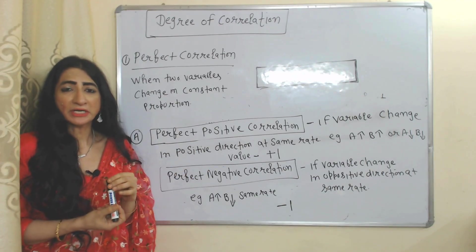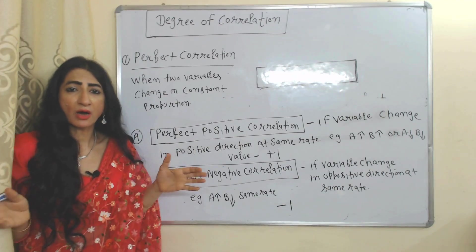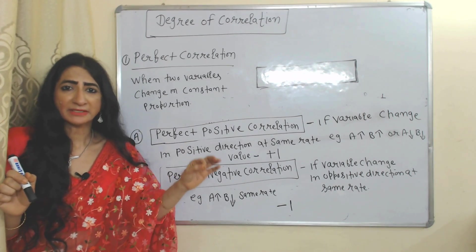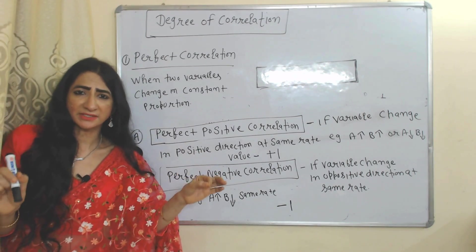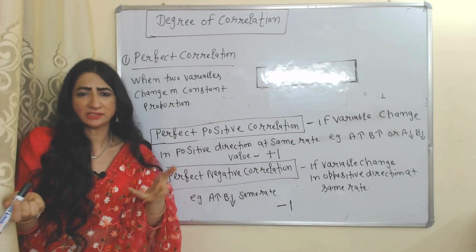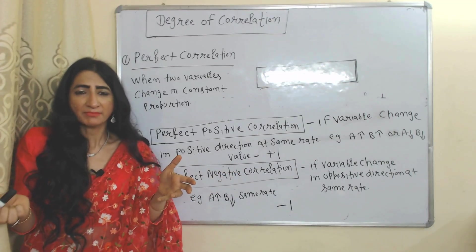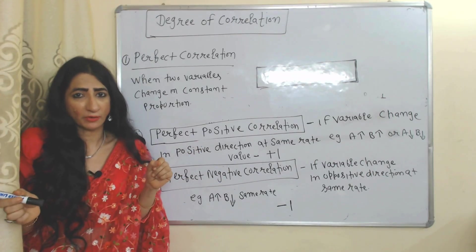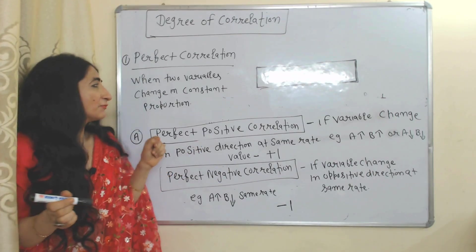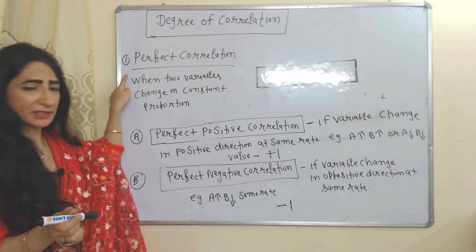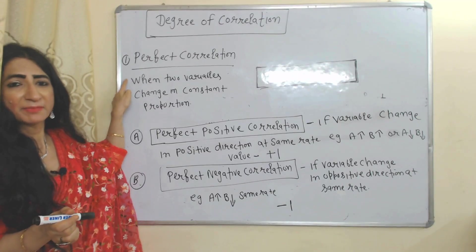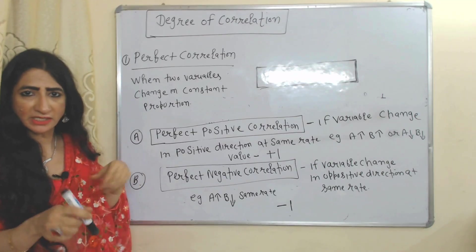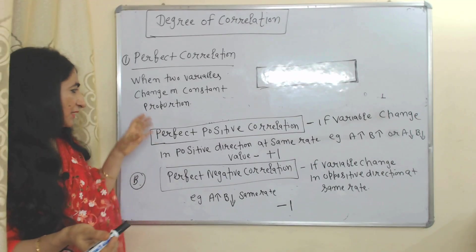But the degree of correlation shows how closely two variables are related to each other. The first degree of correlation is perfect correlation — perfect correlation means when two variables change at a constant proportion.